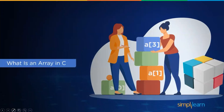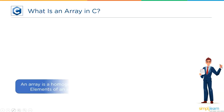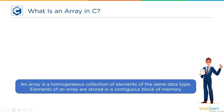Let's begin by understanding what an array in C is. An array is a homogeneous collection of elements of the same data type — similar types of elements are stored under one name called the array name. The array elements are stored in consecutive blocks of memory. Suppose you want to store 50 numbers; instead of creating 50 separate variables, you can use arrays that contain more than one value under a single array name, which makes it easy to access elements randomly and also avoids memory overflow.